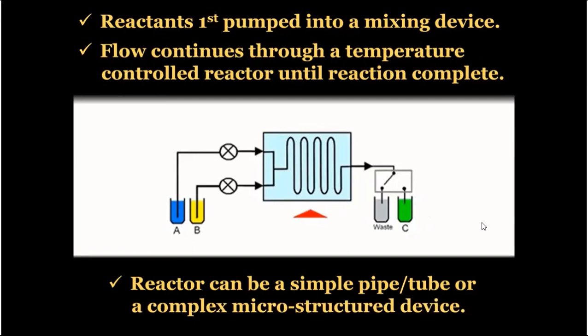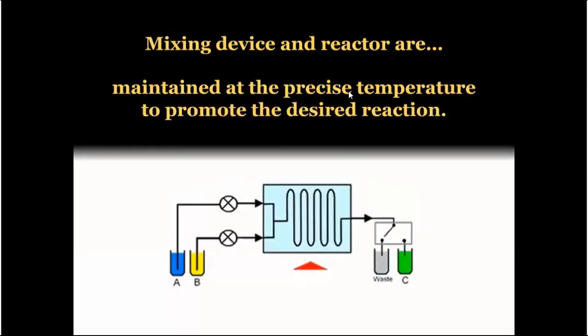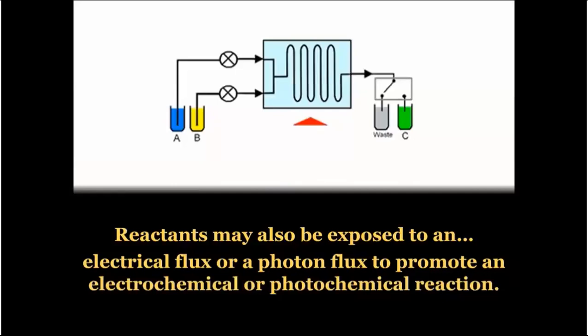There are controllers for photochemical reactions and electrochemical reactions. Mixing device and reactor are maintained at precise temperature to promote the desired reaction. If the reaction temperature changes, then the desired product is not obtained. Reactants may also be exposed to an electric flux or a photon flux to promote electrochemical or photochemical reactions.